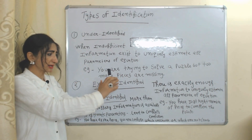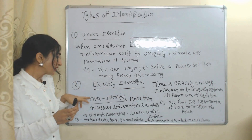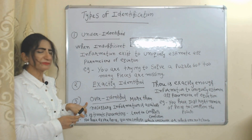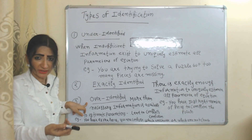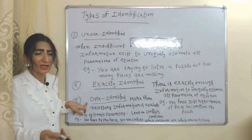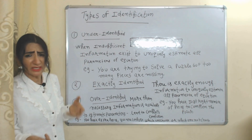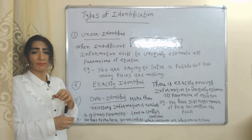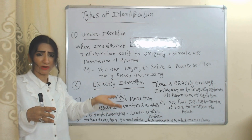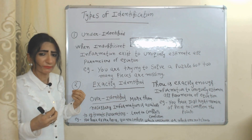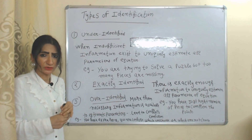Exactly identified: there is exactly enough information to uniquely estimate the parameters of the model — for example, you have just the right number of pieces to solve a particular puzzle. Over-identified means when more than the necessary information is available, because surplus information can create conflict and confusion — for example, you have so many extra pieces to solve a puzzle.